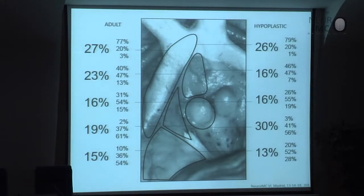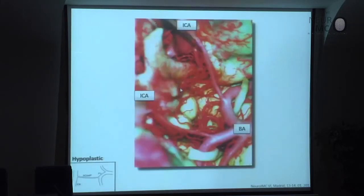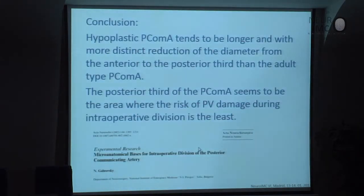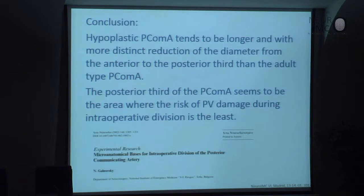This is the zone of penetration. These data can be interesting for neurologists to discuss neurological syndromes depending on where obstruction of the posterior communicating artery has occurred. In conclusion: the hypoplastic posterior communicating artery tends to be longer and with more distinct reduction of diameter from the anterior to the posterior third than other types. The posterior third of the posterior communicating artery seems to be the area where the risk of damage to perforating vessels during intraoperative division is least. This result was published in Acta Neurochirurgica.